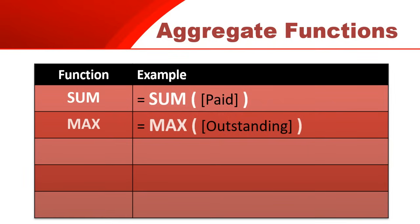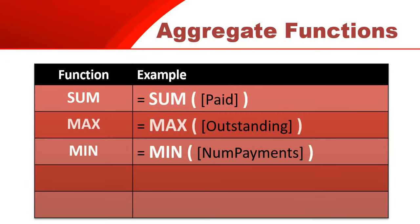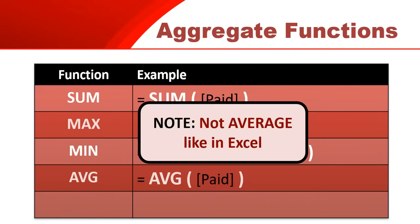Another function is Max, which finds the biggest value out of that particular field — for example, the biggest outstanding value. Then there's Min, which finds the smallest value, such as the smallest number of payments. And then there's Average, if you want to find the average amount paid. Just note: unlike Excel where it's AVERAGE, here it's AVG. So just remember that difference.